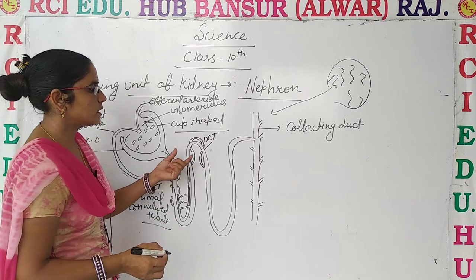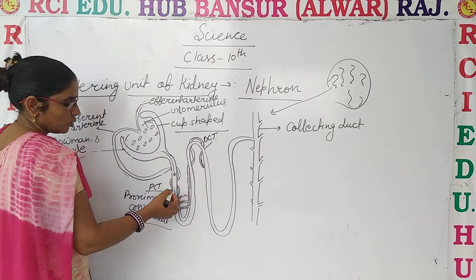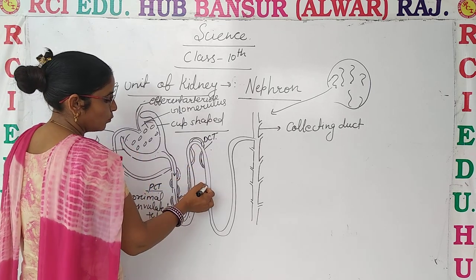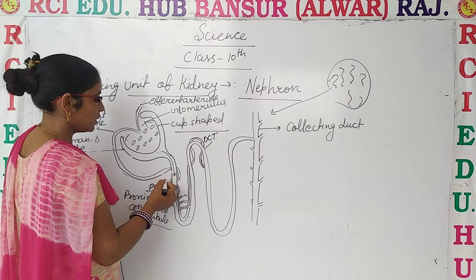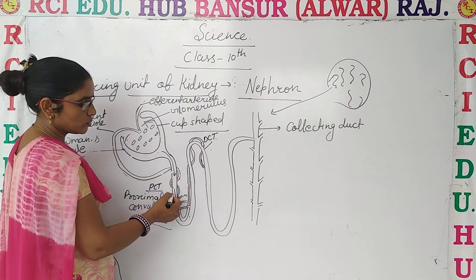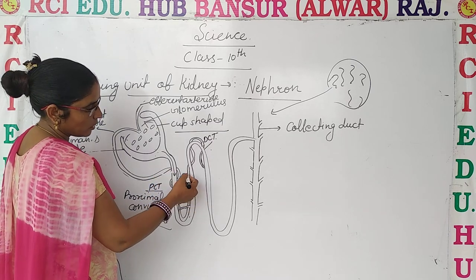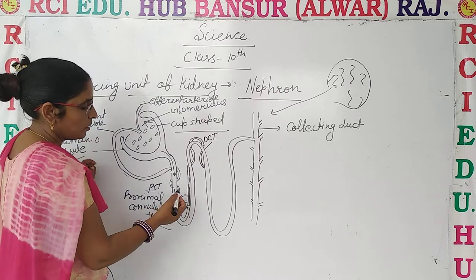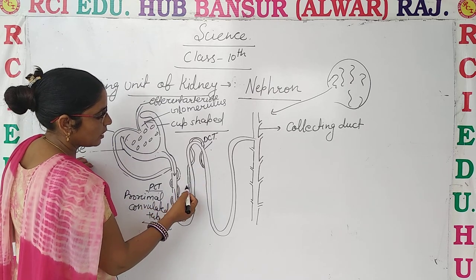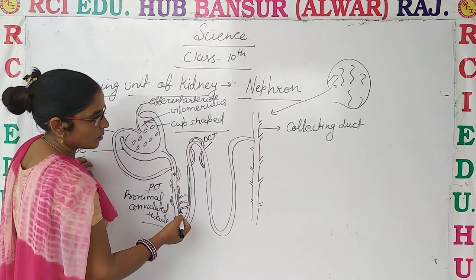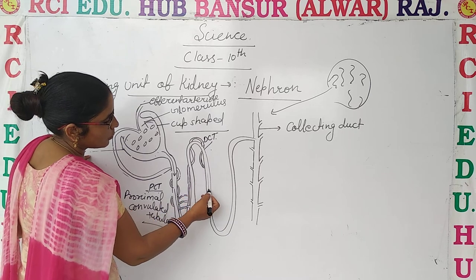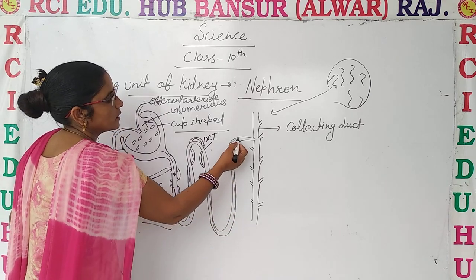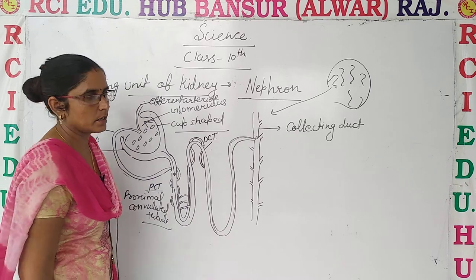This is the distal convoluted tubule — the tubular part through which all the waste is moved. The afferent artery wraps around the proximal and distal convoluted tubules, where it works for reabsorption. After that, the waste moves from the tubular part and is collected into the collecting duct.